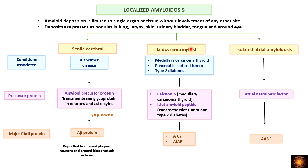The second category of localized amyloidosis is endocrine amyloid, seen in medullary carcinoma of the thyroid, pancreatic islet cell tumors, and type 2 diabetes. In medullary carcinoma thyroid, calcitonin is deposited as amyloid calcitonin protein; in the other two conditions, islet amyloid polypeptide is deposited. The third condition is isolated atrial amyloidosis, where atrial natriuretic factor is deposited in the walls of the atrium.